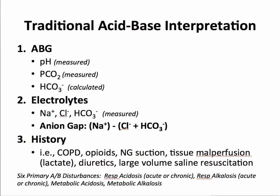There are six primary acid-base disturbances: respiratory acute and chronic acidosis, respiratory alkalosis (either acute or chronic), and then metabolic acidosis or metabolic alkalosis — so six disturbances total.